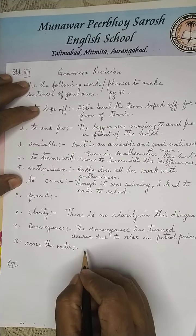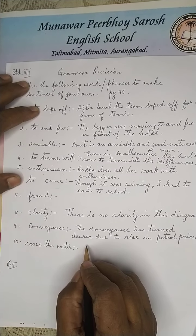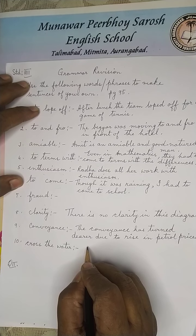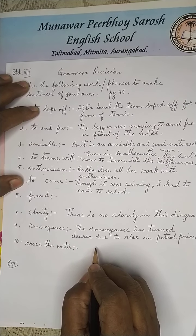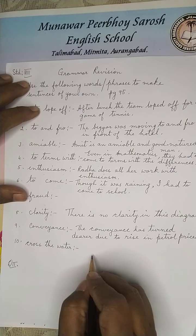Cross the water: My mother had to cross the water to reach England. So you can make out — these types of sentences will come.